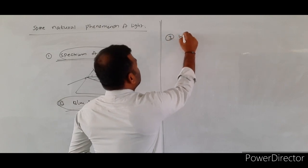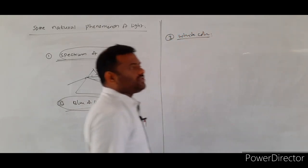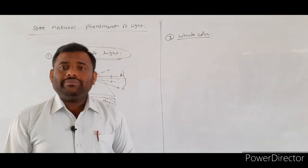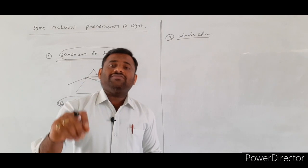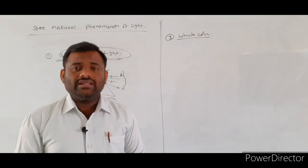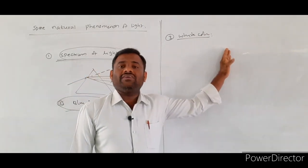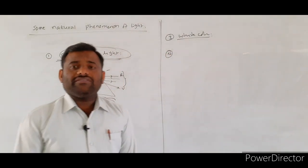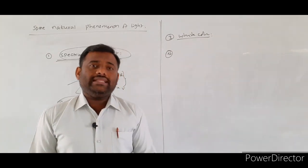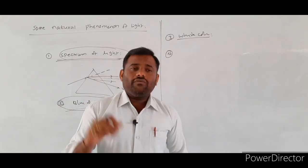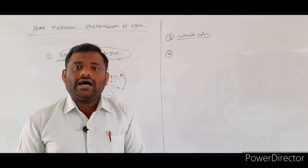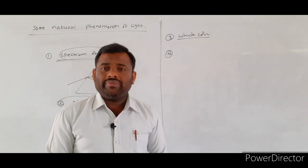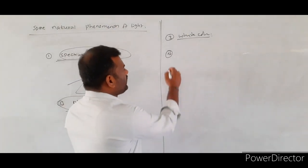The third natural phenomenon is white color clouds. Whenever light is incident on clouds, it undergoes total internal reflection within the clouds, causing the clouds to appear white. The fourth phenomenon is the reddishness of the sun at sunrise or sunset — this occurs due to scattering of light. The fifth phenomenon is the rainbow, observed on rainy days.